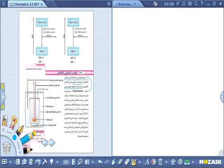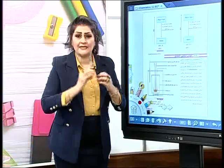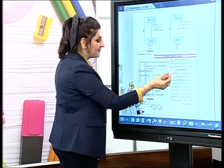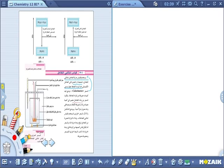ما هي محتويات المسعر؟ انتبهوا طلبتنا، هذا هو الشكل الجديد للمسعر - إذا كان كتاب قديم فانتبه. تُوضع كميات معروفة من المواد المتفاعلة في إناء التفاعل. أريد أن تتفاعل المواد مع بعضها حتى تُعطيني حرارة أو تمتص حرارة، وأريد أقيس كمية الحرارة المُنتصة أو المنبعثة.